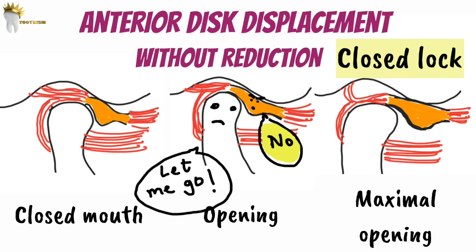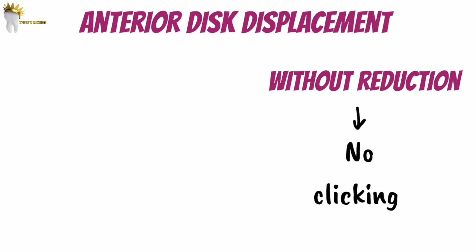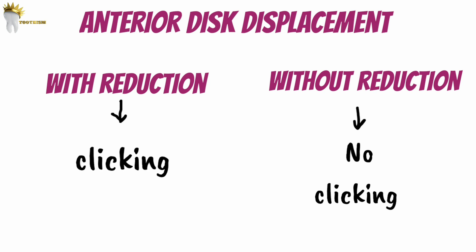This condition is called closed lock. The disc doesn't allow the condyle to translate along the articular eminence. Usually the disc has lost its normal biconcave shape and is rather thick, which is why the condyle cannot negotiate around it. In some patients, disc displacement with reduction can progress to disc displacement without reduction. So patients who have disc displacement without reduction will often have a history of clicking. But when they progress to non-reducing disc displacement, they won't have clicking noise. In other words, in anterior disc displacement without reduction there will be no clicking noise, but the patient might have a history of clicking, meaning they had disc displacement with reduction previously that has now progressed.